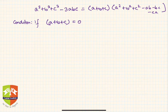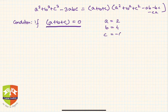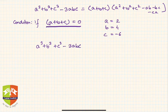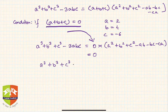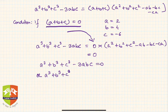This condition won't always be true, but say a = 2, b = 4, c = -6, so a + b + c = 0. Then the identity becomes a³ + b³ + c³ - 3abc = 0 × (a² + b² + c² - ab - bc - ca) = 0. Therefore a³ + b³ + c³ = 3abc.